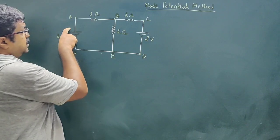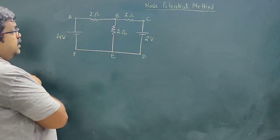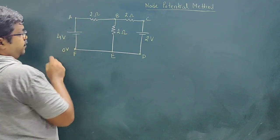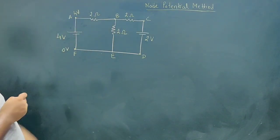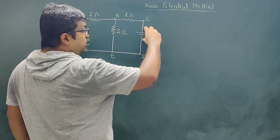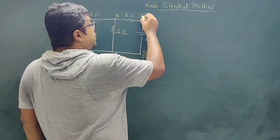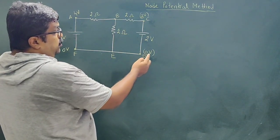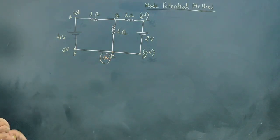So basically, if you see this cell and this cell — this is 4 volt and this is 2 volt — so that means across this the potential difference is 4 volt. If I consider this terminal to be at 0 volt, that means this terminal is at 4 volt, because potential difference is 4 volt. From this side it is 2 volt, so this point will be at 2 volt. This is 0 and this is 0, so obviously this point will be at 0 volt.